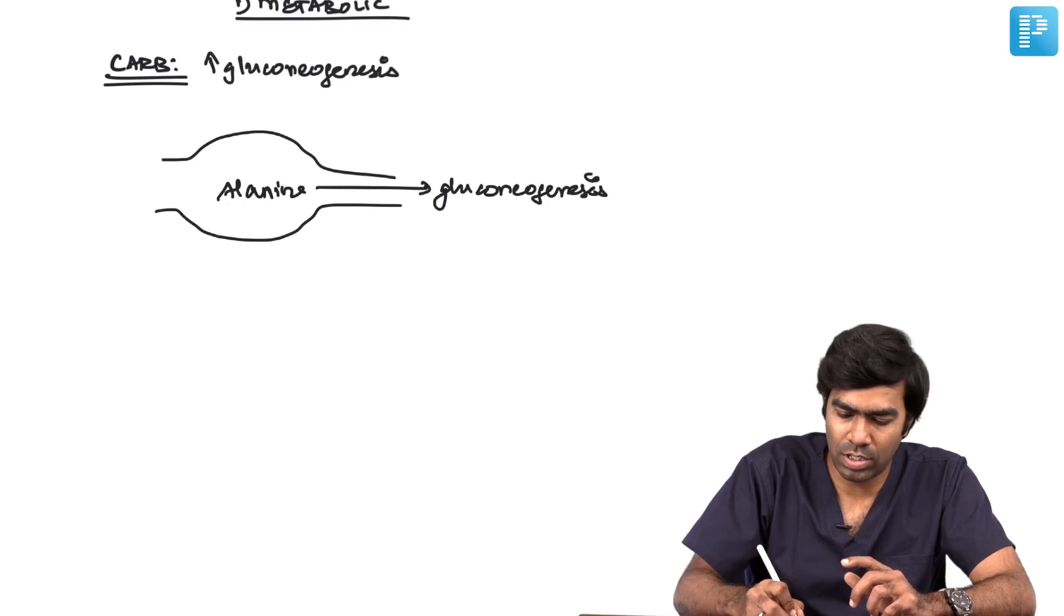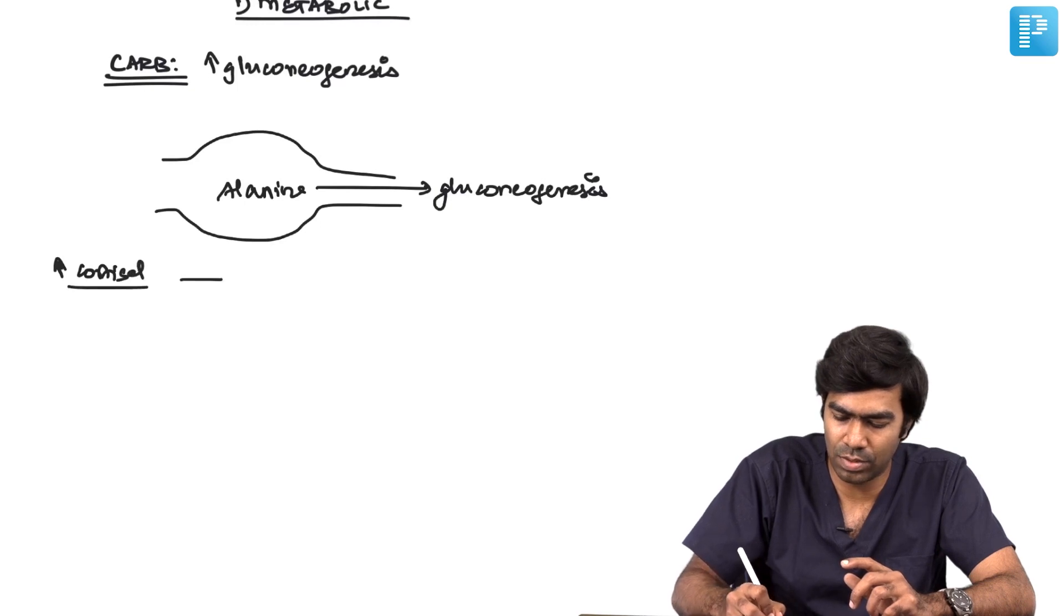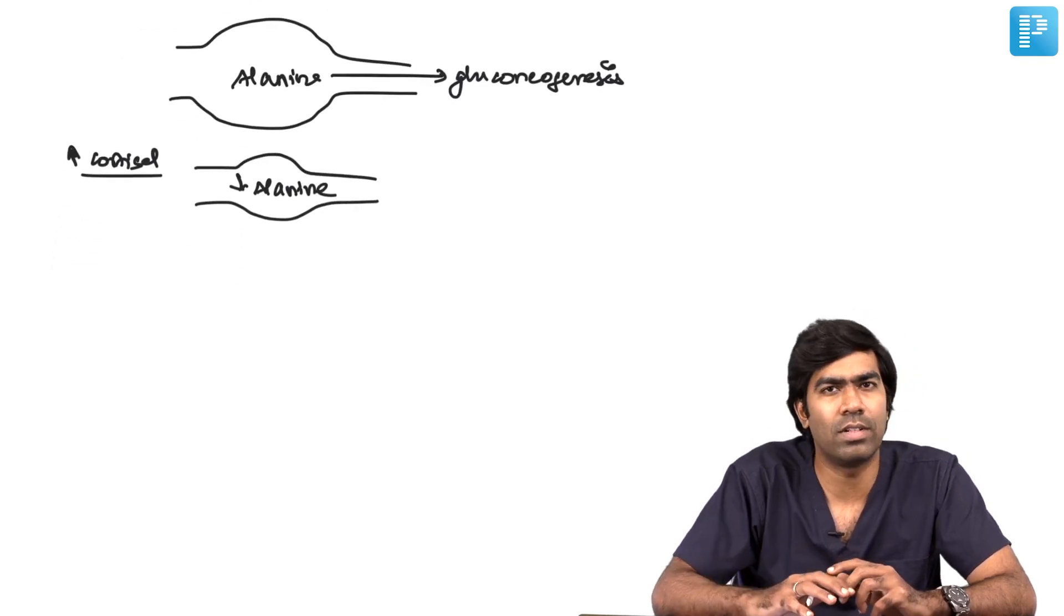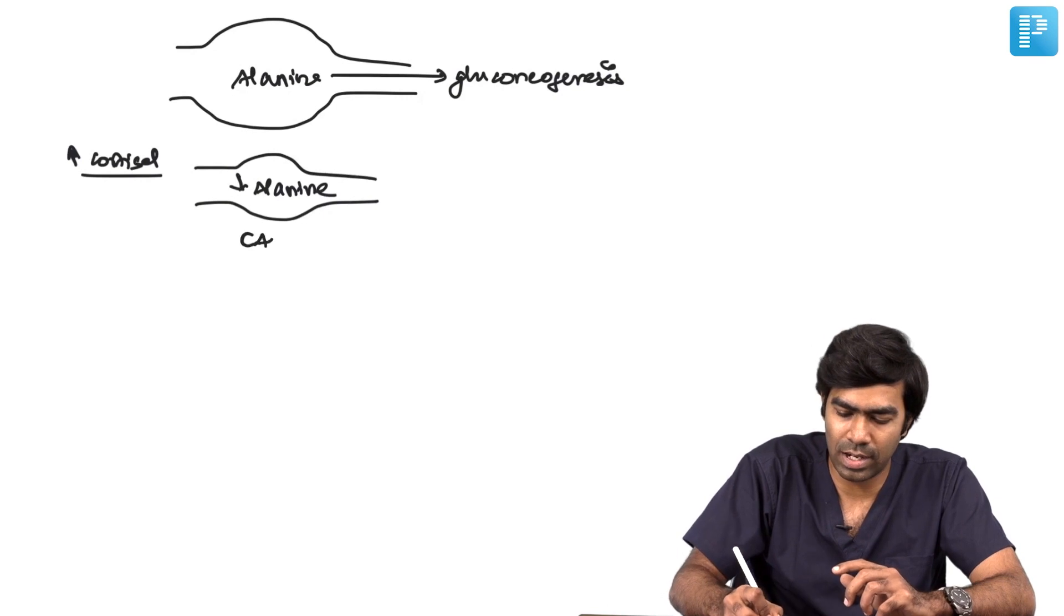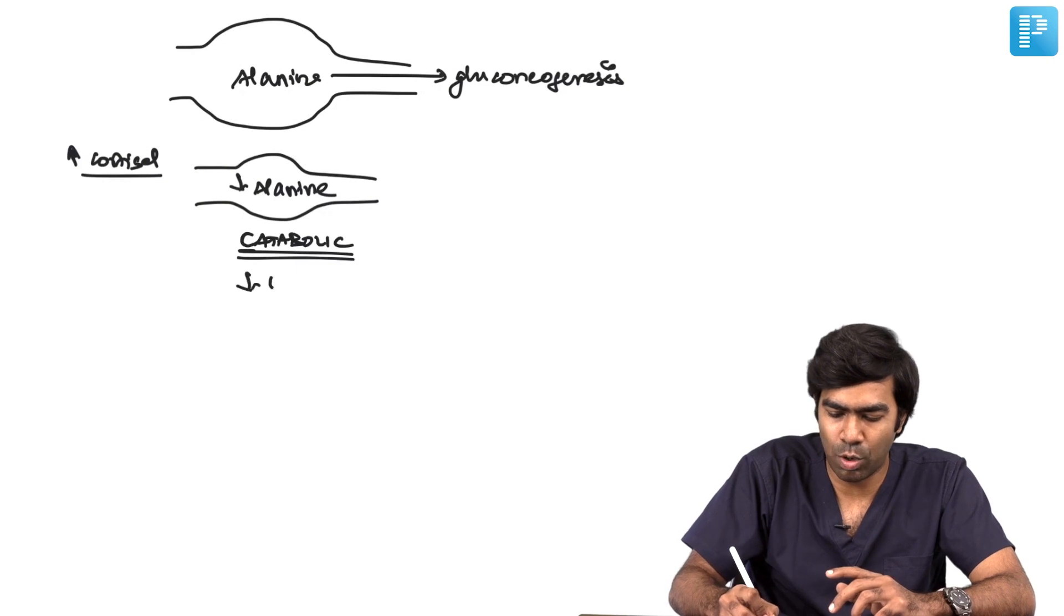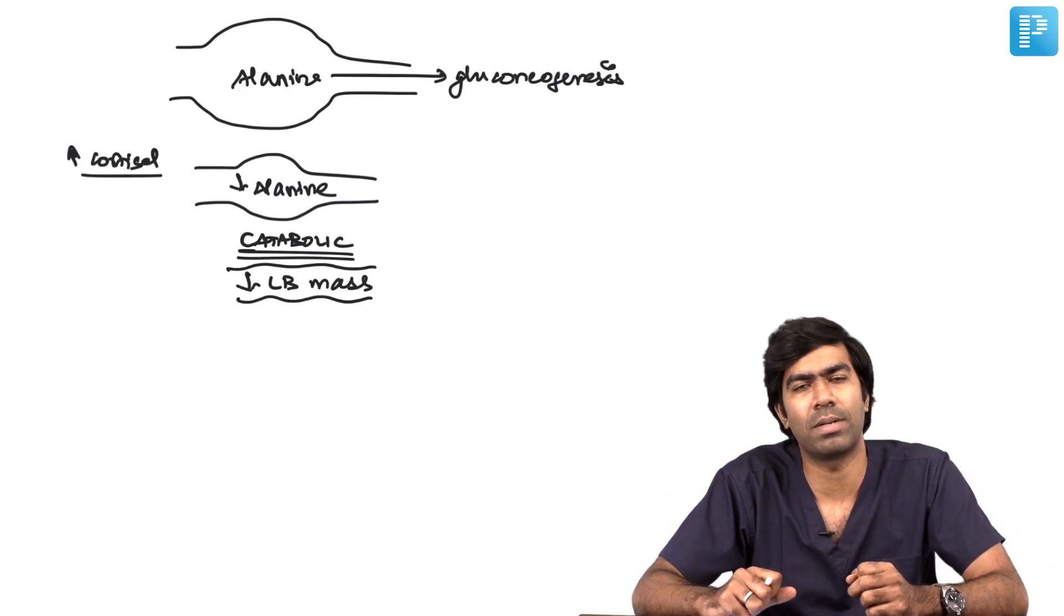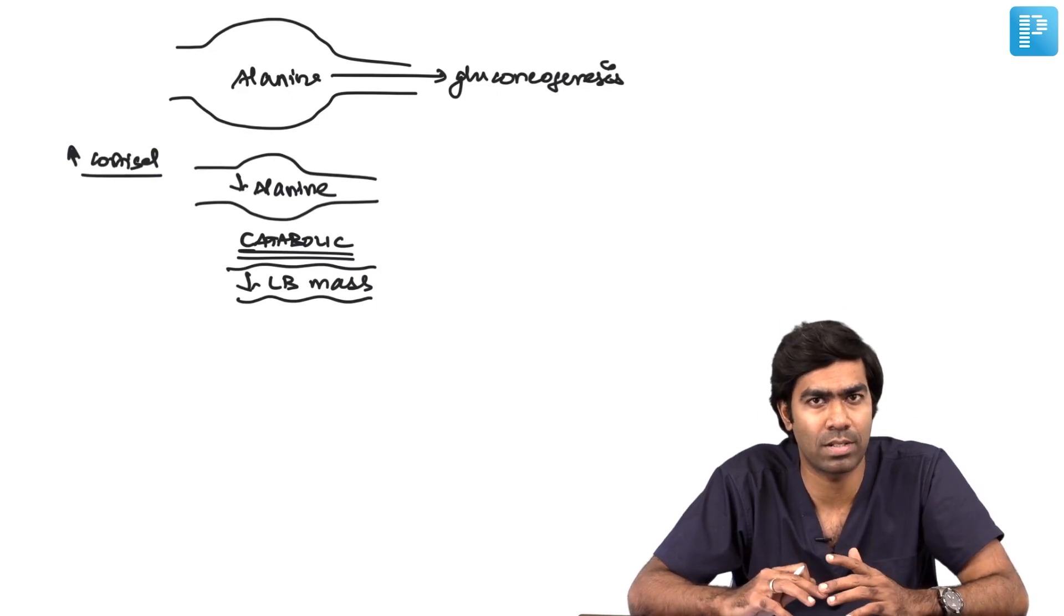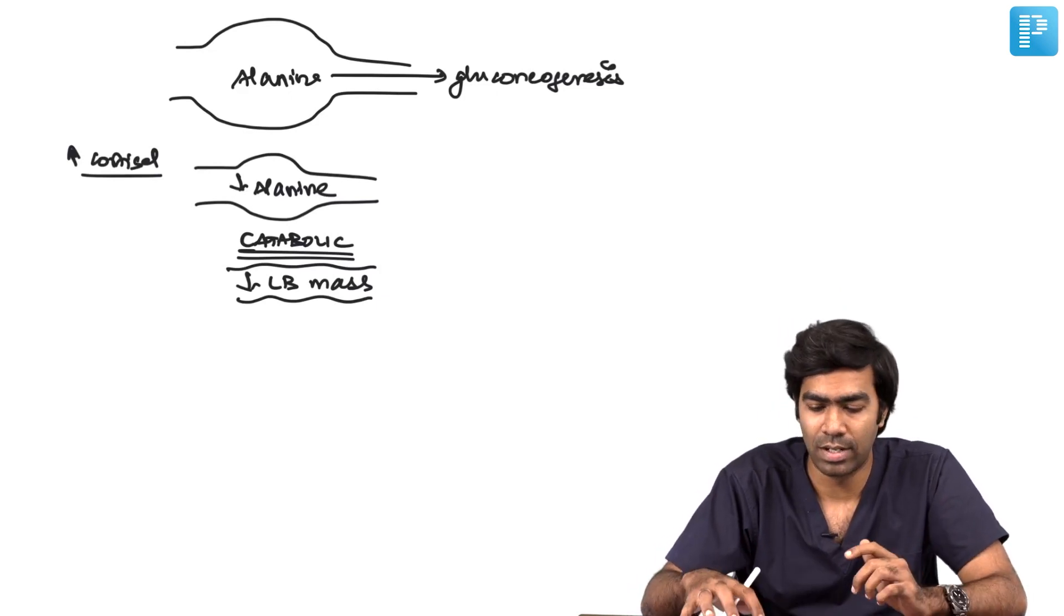Consequently, with excessive cortisol your alanine in the muscle will reduce. That means you are going to have reduced muscle mass, which means they are catabolic to the muscles. At the same time, your lean body mass will reduce. Even though your body might be obese with weight gain from fat, the lean body mass and muscle will actually be reduced.